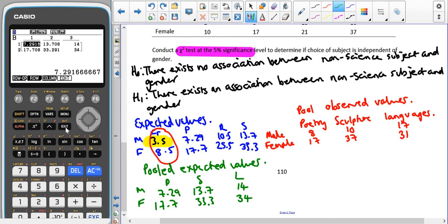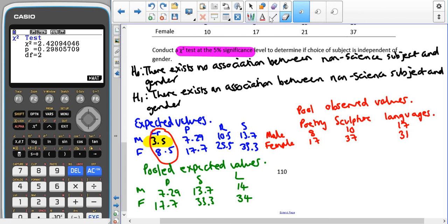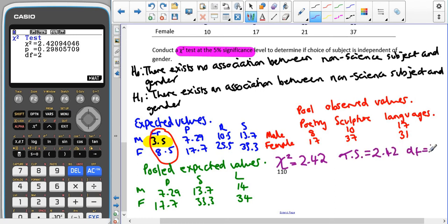If we click exit, exit, we can now write down these values. So our chi-squared value is 2.42. That's our test statistic. Our degrees of freedom is 2. So then using our critical values table on page 20, remember to use the right-hand side, 5%. So we're looking down from 0.95. Degrees of freedom, 2, which means that we end up with a critical value of 5.991.